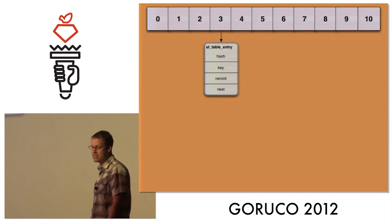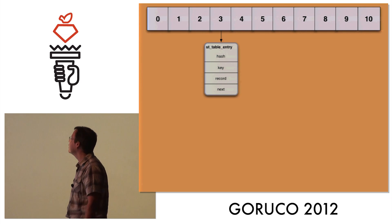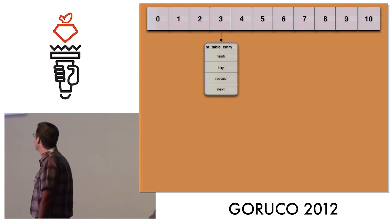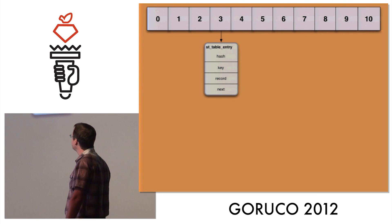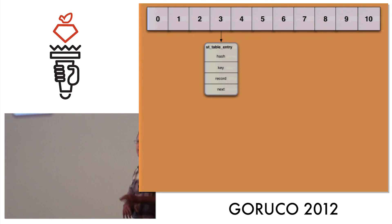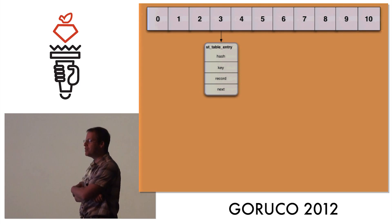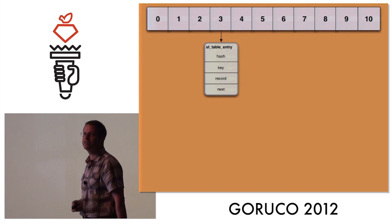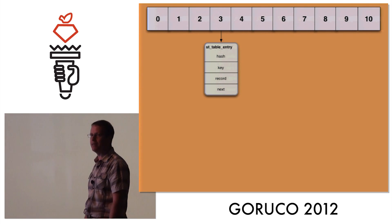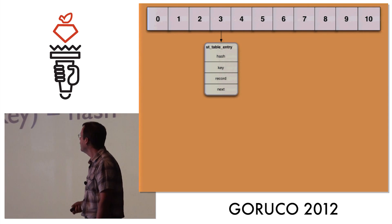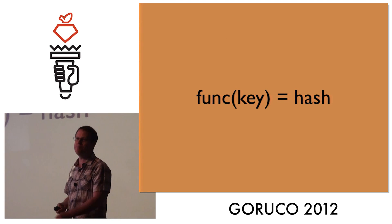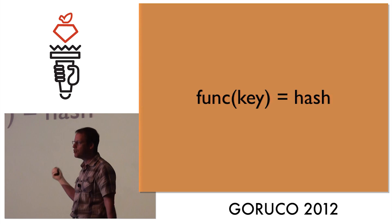Ruby, like most programming languages, uses something called a hash table to implement hash objects. A hash table is really just a collection of bins or buckets. Ruby initially uses 11 bins to save values in a hash, and it saves the key and value in something called an st_table entry structure. The way a hash table works is it assigns each entry to one of those bins. A hash function is an arbitrary mathematical formula that takes any value and returns an integer.